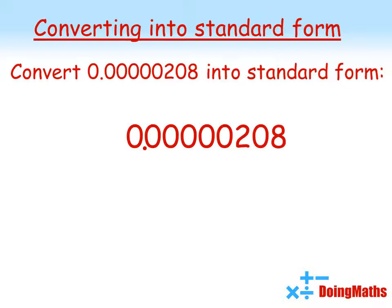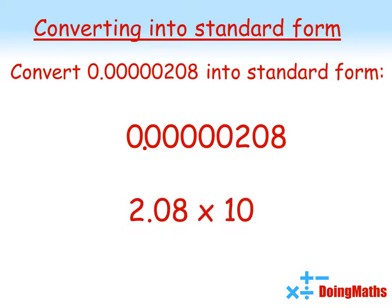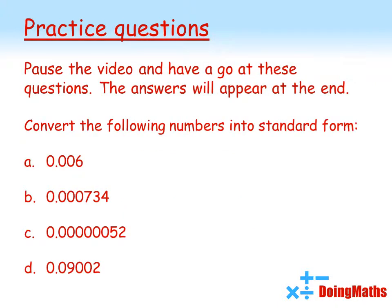Let's try a more complicated example. We've got 0.0000208. We find the non-zero part, which starts with the 2, and bring that down. Notice how the decimal point is placed so that we've got a number between 1 and 10. In standard form it must be times by 10 to the power of something, so we work out how many places the decimal point has moved — that's 6 places to get from where it was to just after the 2. Again we're making it smaller, so our power is minus 6. In standard form we've got 2.08 times 10 to the minus 6. Those two are exactly the same number, just written in different forms. Pause the video and have a go at these questions — the answers will appear at the end.